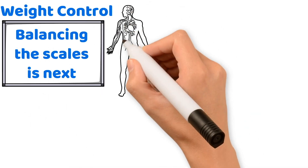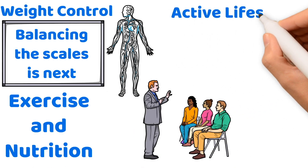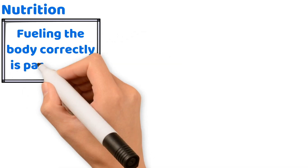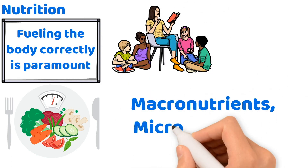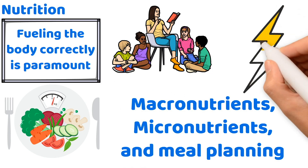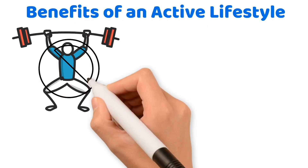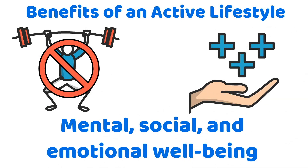Weight control is about managing body weight through exercise and nutrition. Teach your students the importance of an active lifestyle combined with a balanced diet to maintain a healthy body weight. Fueling the body correctly is paramount — a well-balanced diet supports all types of physical activities. Educate your students on macronutrients, micronutrients, and meal planning to optimize their energy and health. An active lifestyle isn't just about physical health — it's a comprehensive benefit package for mental, social, and emotional well-being.